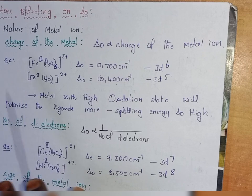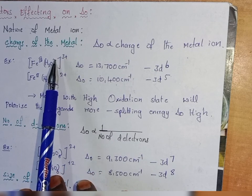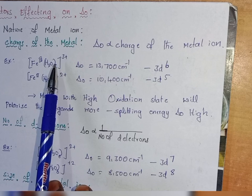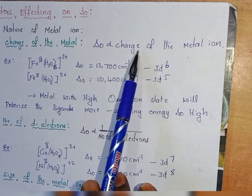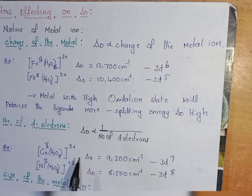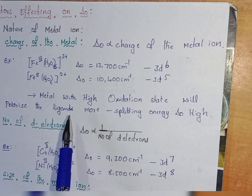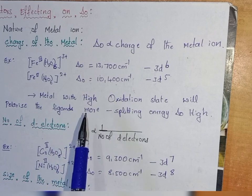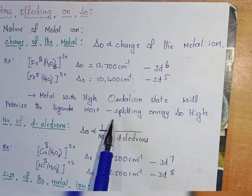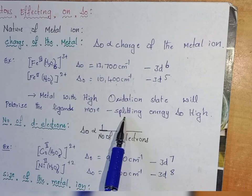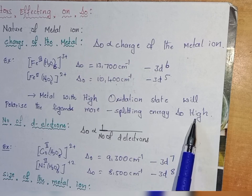The first factor affecting delta O is the charge of the metal. With increasing charge of the metal, there is an increase in the value of delta O. Delta O is directly proportional to the charge of the metal ion, because a metal with a high oxidation state will polarize the ligands more. The interaction between metal orbitals and ligand orbitals will be closer, therefore the repulsion will be high, the splitting of the orbitals will be high, and the energy gap between the two energy levels will be high — meaning the crystal field splitting energy in octahedral complexes is high.